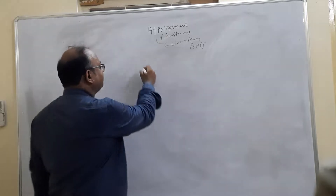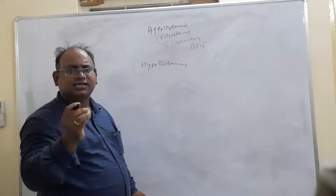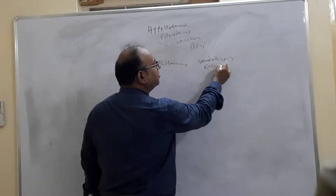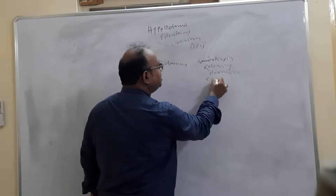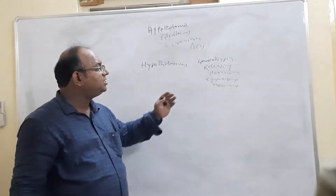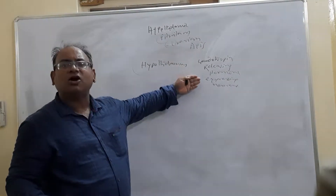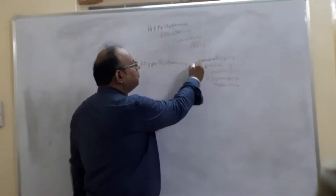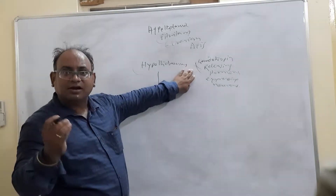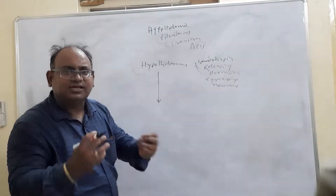We know that hypothalamus is present in our brain. Within this hypothalamus, there is a special type of cells called gonadotropin-releasing hormone expressing neurons. From the name itself, it is very clear that these cells secrete a hormone called gonadotropin-releasing hormone. So from hypothalamus, gonadotropin-releasing hormone is released.